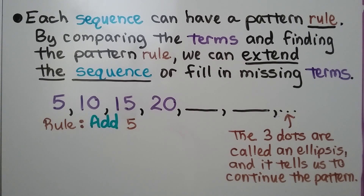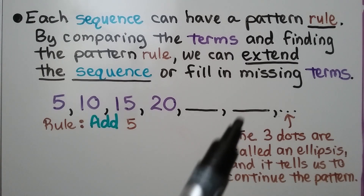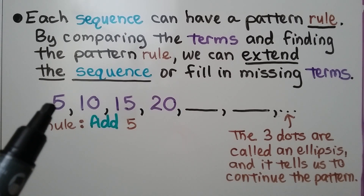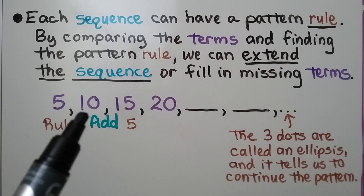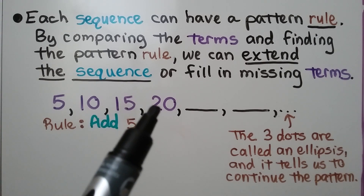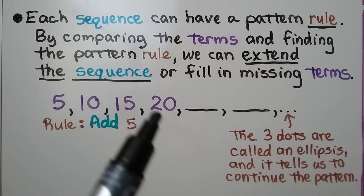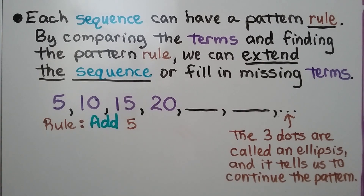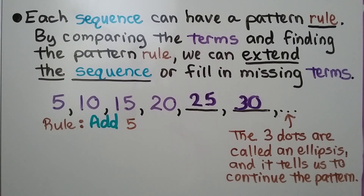In this sequence, we see the terms are 5, 10, 15, 20, then we have 2 missing ones. We can see the rule is add 5: we add 5 and get 10, add 5 and get 15, add 5 and get 20. We can fill these in — if we add 5 to 20, we get 25, and if we add 5 more, we get 30.